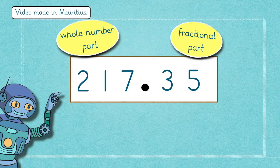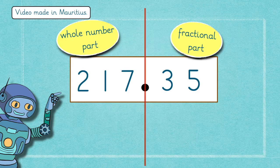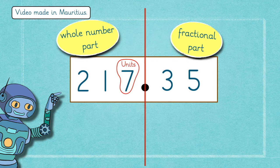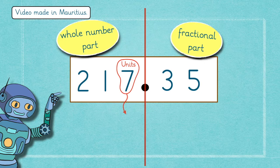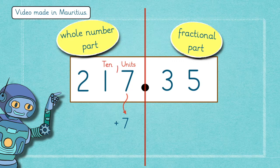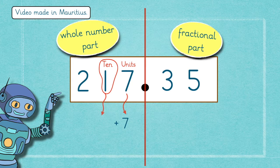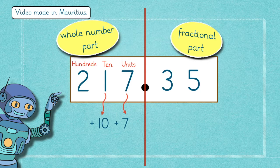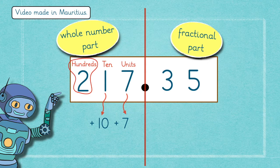In the case of 217.35, you'll notice that on the left you have all the whole numbers, such as 7 units, one group of 10 which makes 10, and two groups of hundreds which makes 200.